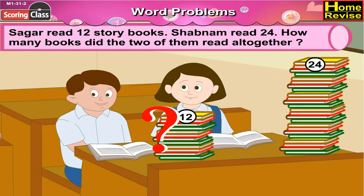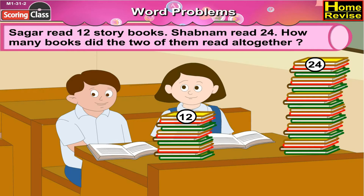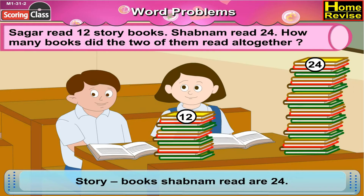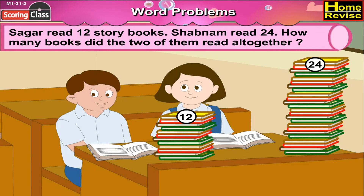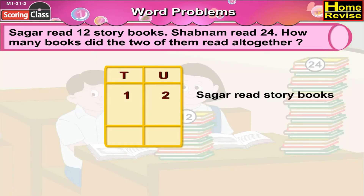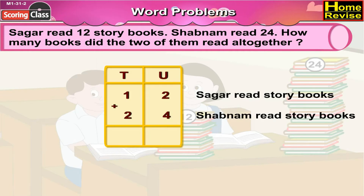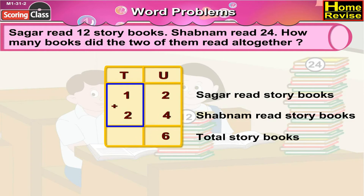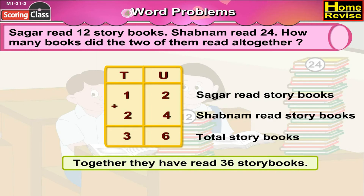How many books did the two of them read altogether? Storybooks Sagar read: 12. Storybooks read: 24. Total number of storybooks read by them would be 12 plus 24. Under units, 2 plus 4 is 6. Under tens, 1 plus 2 is 3. So together, they have read 36 storybooks.